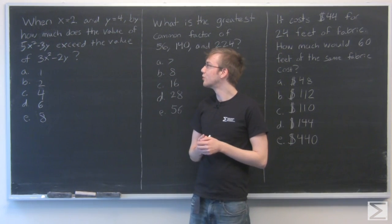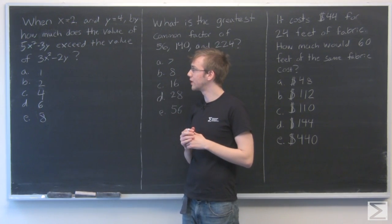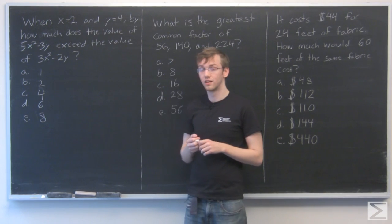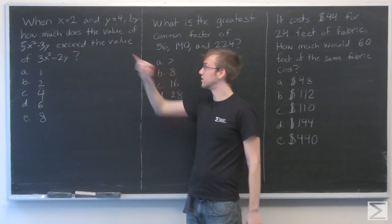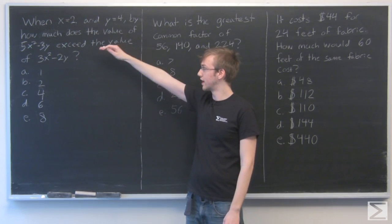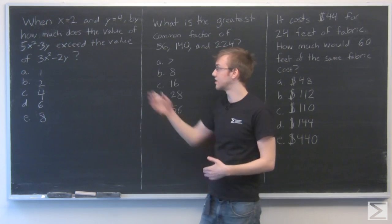Okay, so the first one: when x equals 2 and y equals 4, by how much does the value of 5x squared minus 3y exceed the value of 3x squared minus 2y? Okay, so this one looks pretty simple. We just need to plug x equals 2 and y equals 4 into these two equations, and then subtract the second one from the first one, and whatever we get is the difference, that's how much it exceeds.